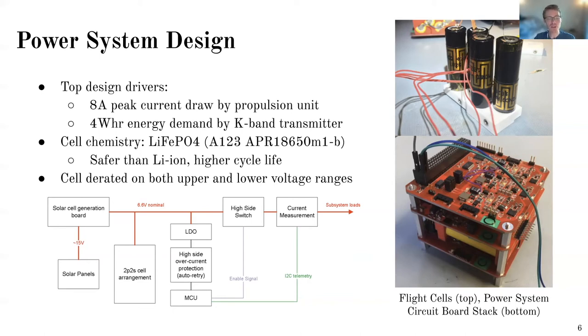And then the energy requirement came from the K-band transmitter just because the K-band transmitter drew around 15 watts when it was turned on. And that far exceeded what the solar panels could provide at any given time. And then additionally to those top requirements, there was also the cycle life requirement. So the fact that we're going into low Earth orbit, so we have around a 90-minute period, and then the temperature swings of the orbit.